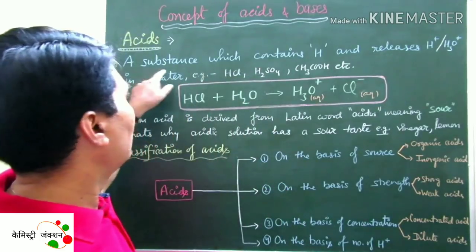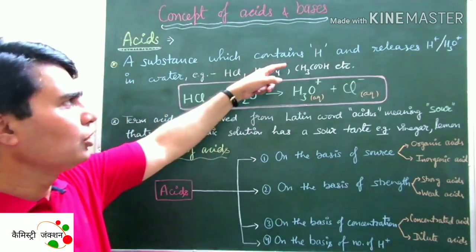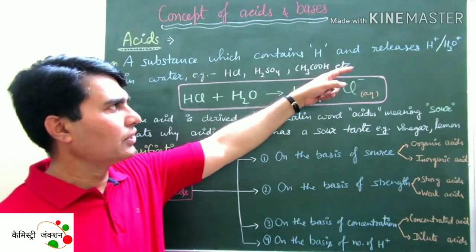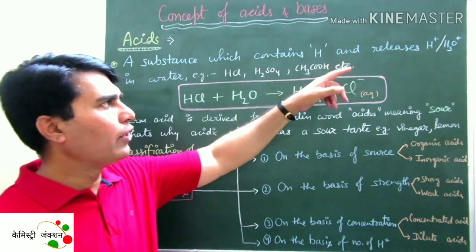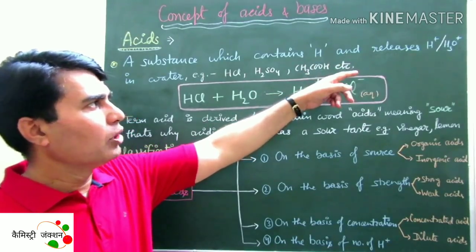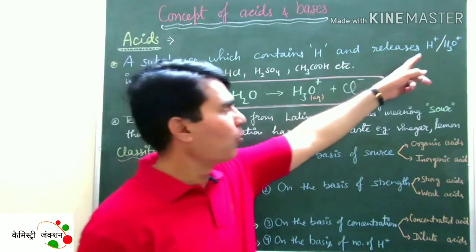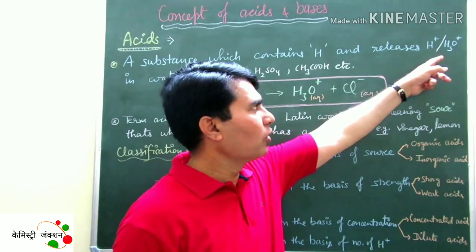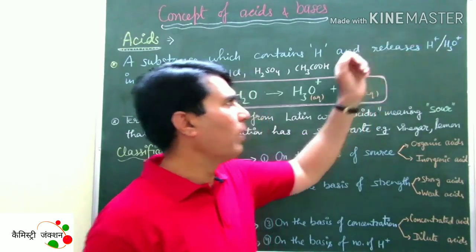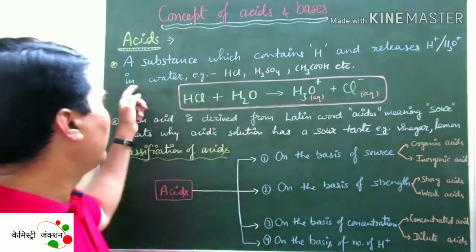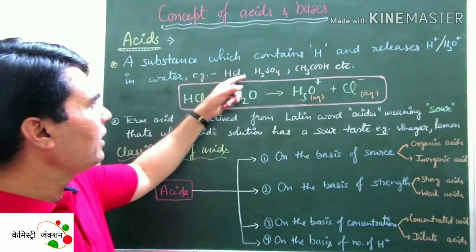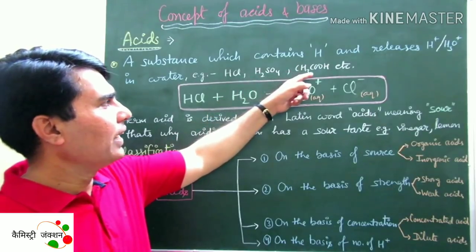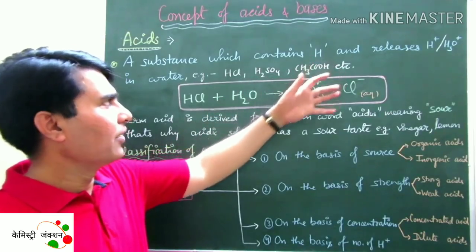A substance which contains hydrogen and releases H+ (proton) or hydronium ion (H3O+) in water is called an acid. H+ is called a proton, and H3O+ is called hydronium ion. Examples include HCl, H2SO4, acetic acid, etc.